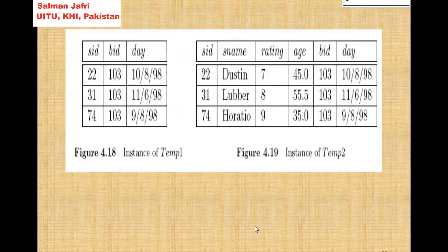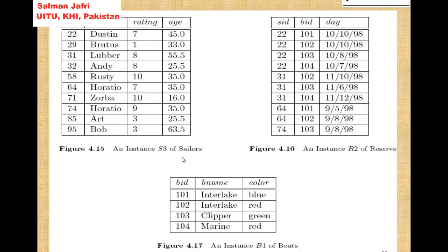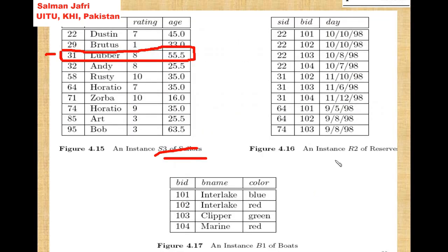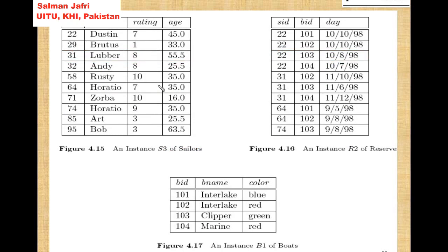Looking at the sailors instance, the row for Luba is selected as part of the query. Then we have a natural join with reserves, where SID is the common field. So SID 31 is the row selected, and all entries of 31 have to be selected — this row and this row are selected in the natural join.